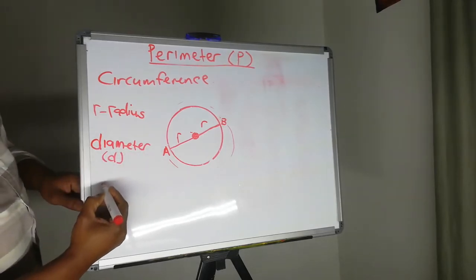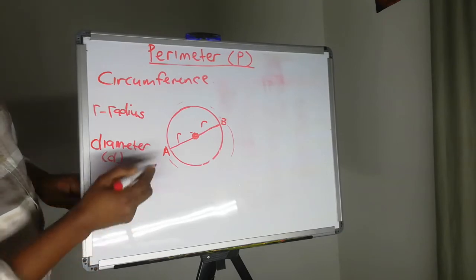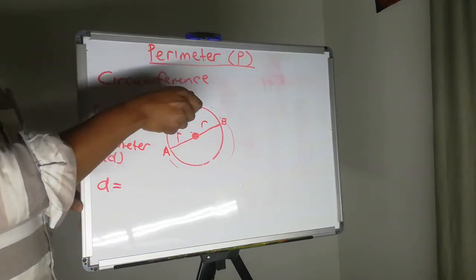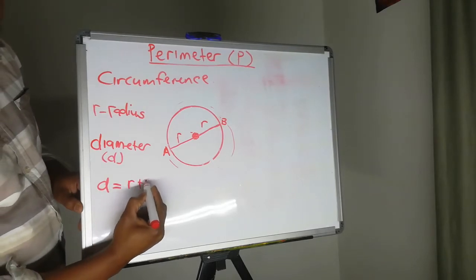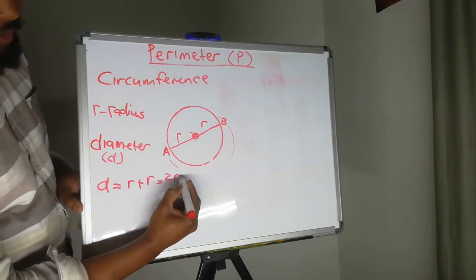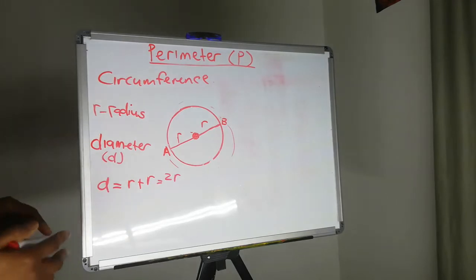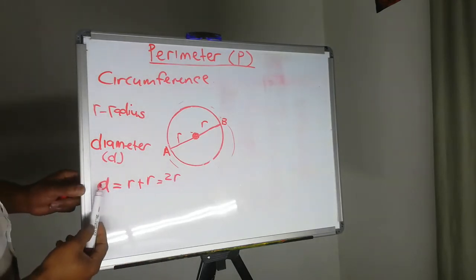And we can see that D is equal to how many Rs? One, two. So R plus R, which is two Rs. So two radii is equal to one diameter.